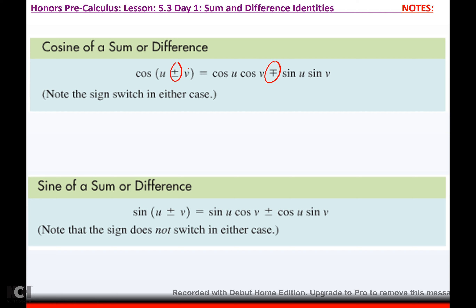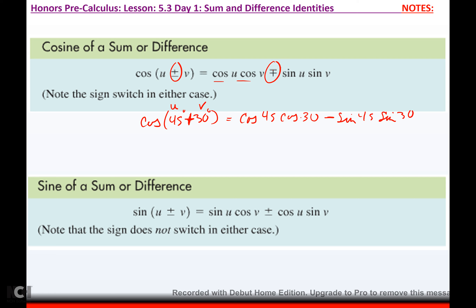What this means is you switch signs. So let's say I had cosine of 45 plus 30 degrees. Then u would be 45, v would be 30. So you say that would be cosine of 45 times cosine of 30. Since this one is plus, we switch the sign over here — that'll be minus. And then you do sine 45 times sine 30.